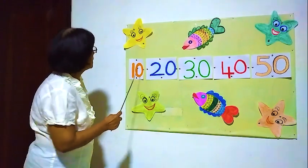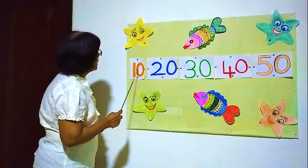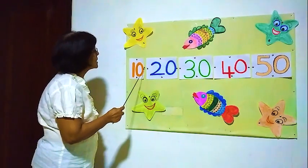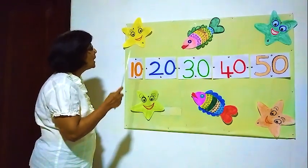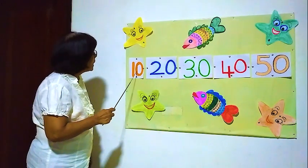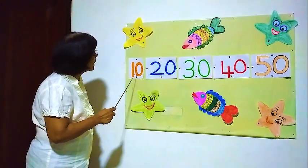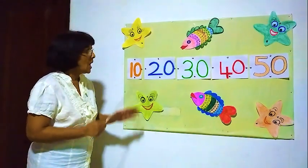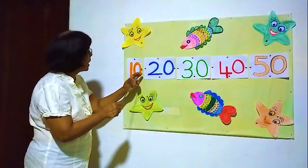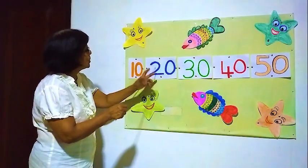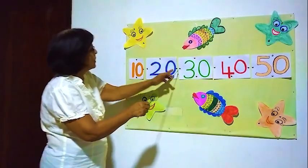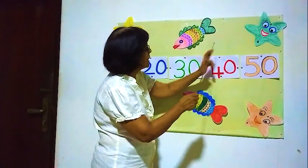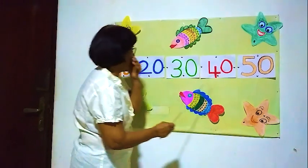Now here, here in the middle. Now 10 here: 11, 12, 13, 14, 15, 16, 17, 18, 19, 20. After 10, there are 9 numbers — 11, 12, like that. After those 9 numbers, 20. After another 9 numbers, 30. After another 9 numbers, 40. After another 9 numbers, 50. It's coming like that.